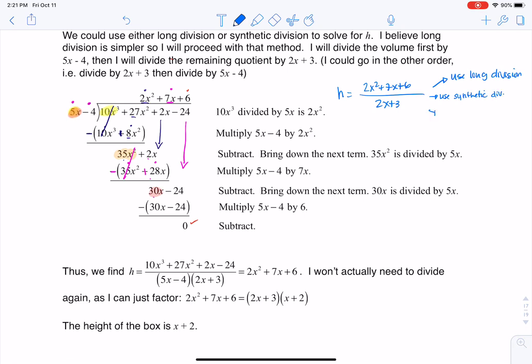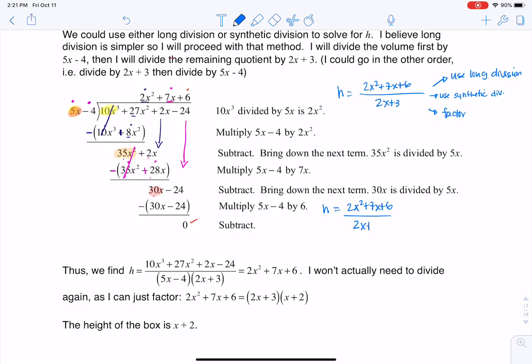But what I opted to do is I decided just to factor it. I like factoring, so I didn't mess with anything else. So what that means is my height, yes, it was 2x squared plus 7x plus 6 over 2x plus 3. But because I know how to factor, and if that's not your strong point, then go with long or synthetic division, I broke this into binomials. We've got 2x and x here. I put 3 and 2, so let me go 3 here, 2 here.